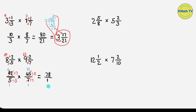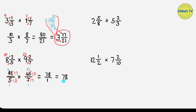78 over 1 is an improper fraction — the numerator is greater than the denominator. Let's simplify it by dividing the numerator by the denominator. If we divide 78 by 1, the answer is 78. There is no remainder, so the answer is a whole number: 78. This is the final answer.